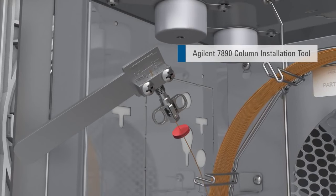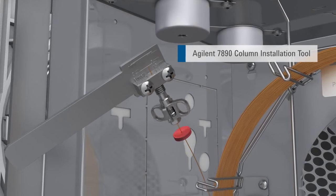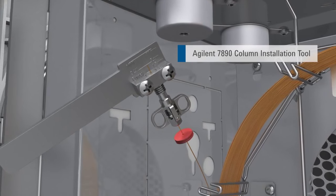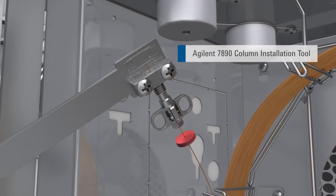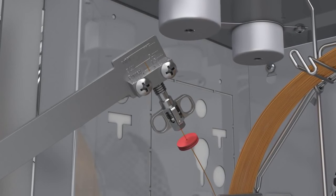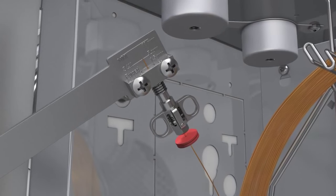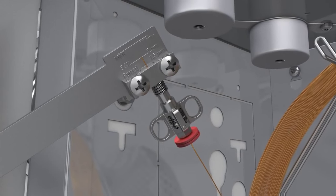A column installation tool to pre-swage the ferrule onto the tubing improves consistency. Because soft graphite polyamide blend ferrules can still be moved after pre-swaging, slide the septum beneath the column nut to hold the nut in place.